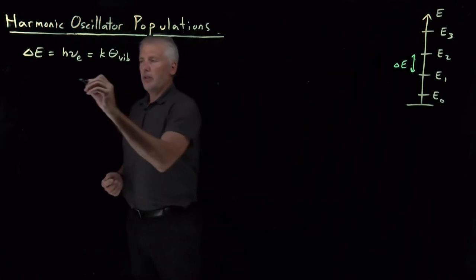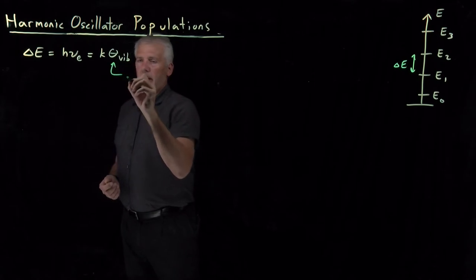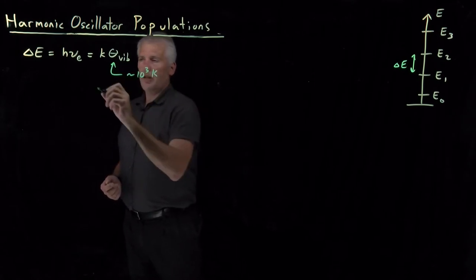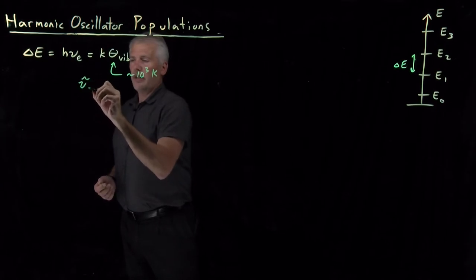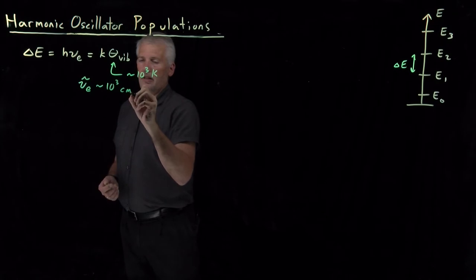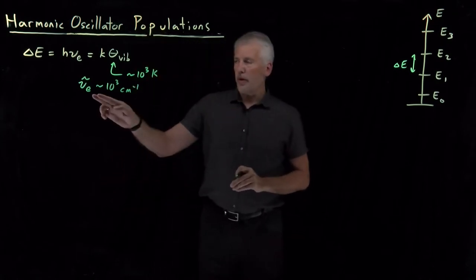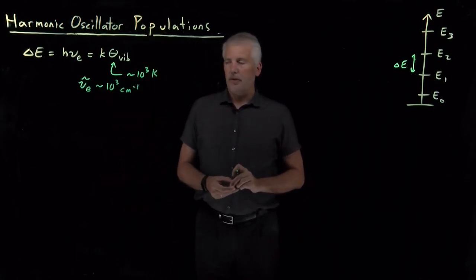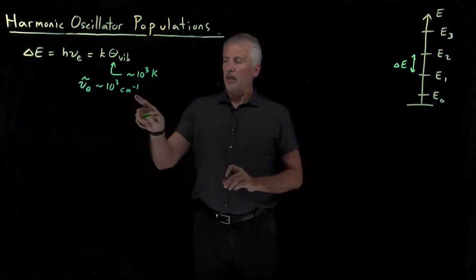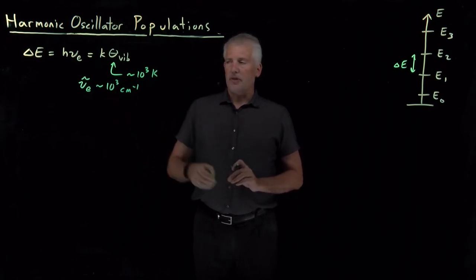We've seen that theta vibrational is in the vicinity of several thousand Kelvin. Equivalently, the fundamental vibrational frequency in units of wave numbers works out to be a few thousand inverse centimeters typically. So those are photons in the infrared portion of the spectrum.